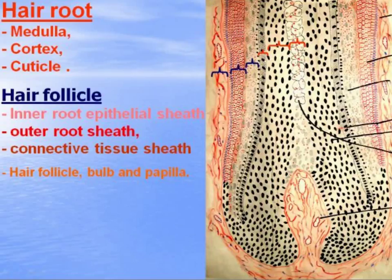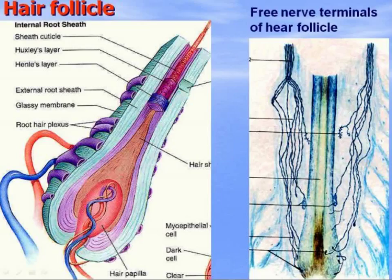Melanocytes in the hair bulb synthesize melanin and supply it to the growing, differentiating cells of the hair cortex, providing the specific color to the hairs. The hair papilla contains blood vessels and nerve terminals of the hair follicle, which feed the hair.